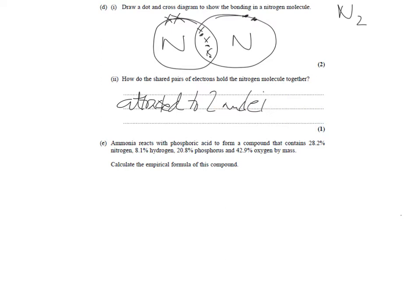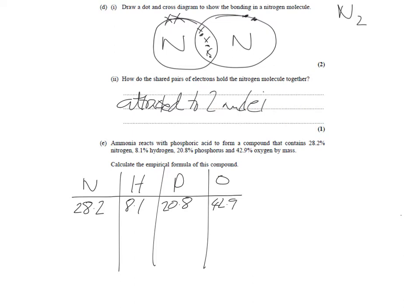Now, the final part to this is a question which is asking for an empirical formula. So, you should know that an empirical formula is the lowest ratio of each atom or each type of atom in a compound. So, we've got nitrogen, hydrogen, phosphorus. Maybe I should be writing a little bit smaller so I can try and squeeze this onto a page. Let's see how it goes. So, we've got 28.2% nitrogen, 8.1% hydrogen, 20.8% phosphorus, 42.9% oxygen.